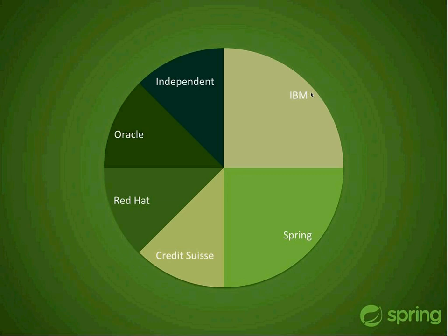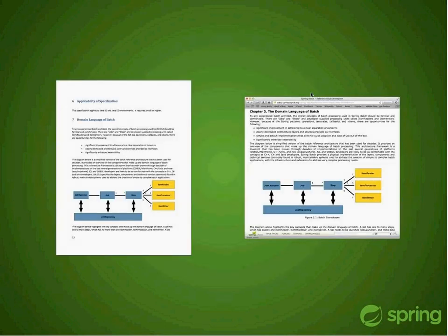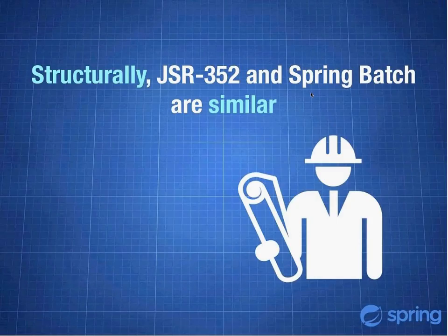This is a breakdown of the expert group membership. IBM had the spec lead and two people involved; Spring had two people; the rest had one person each. So Spring was heavily involved in this spec. From our involvement, the result was essentially that the documentation for JSR 352 and the documentation for Spring Batch — except for the words 'Spring Batch' being replaced with 'JSR 352' — are word-for-word identical.